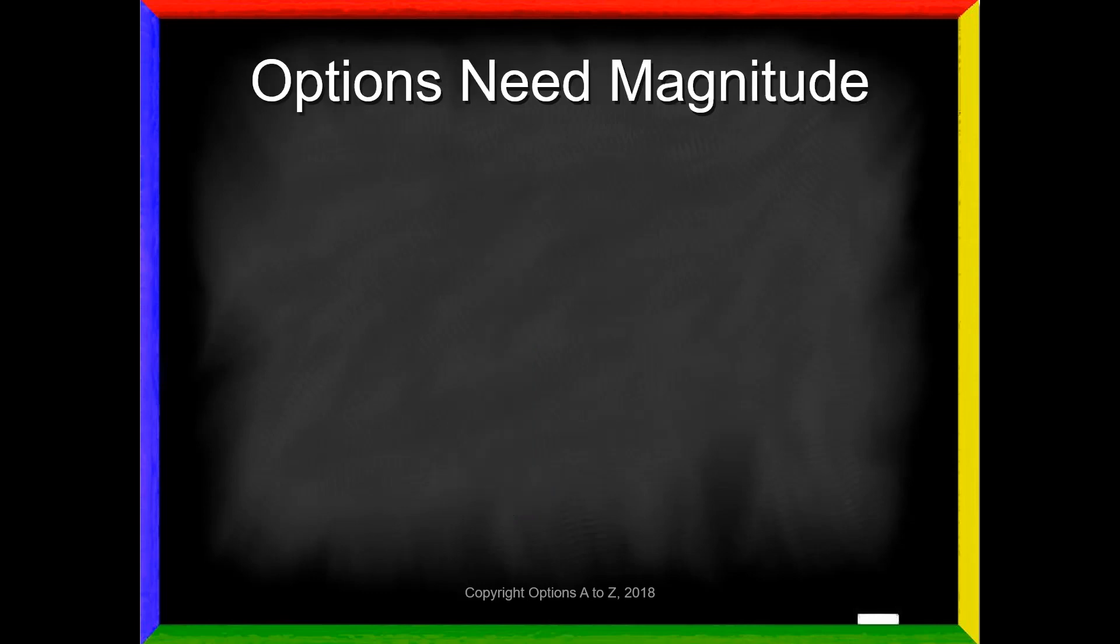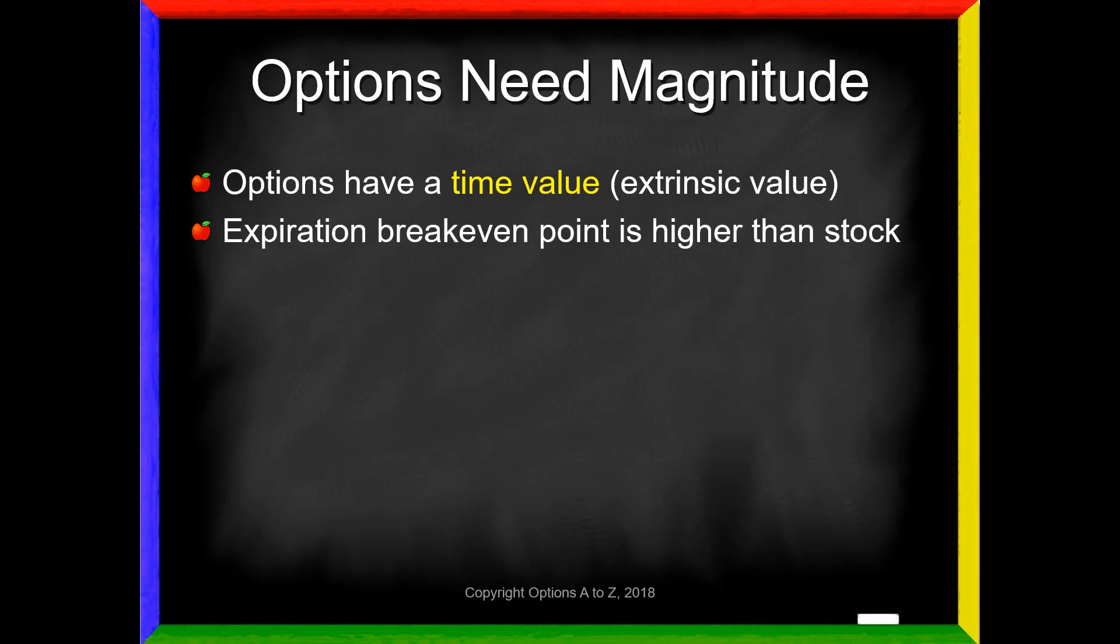Options also need magnitude. So what in the world does this mean, and where does it come from? Options have a time value, also called the extrinsic value. And because we're paying this time value, the expiration break-even point is higher on your option than it is for shares of stock. So for example, let's say that you buy shares of stock for $100. You just need the stock price above $100 to make money. Again, putting commissions aside, the asset itself will start profiting for all stock prices above $100.